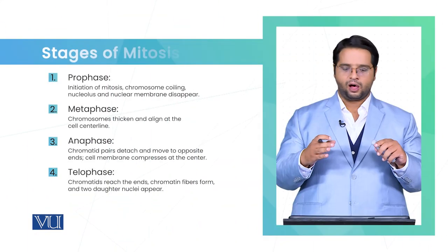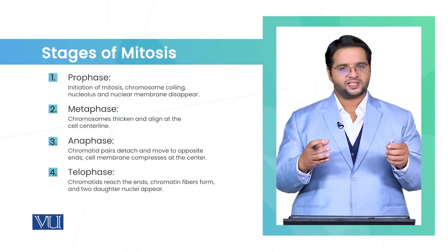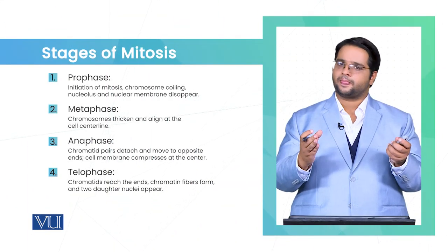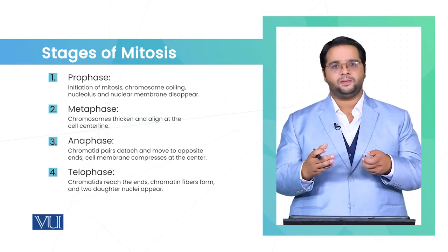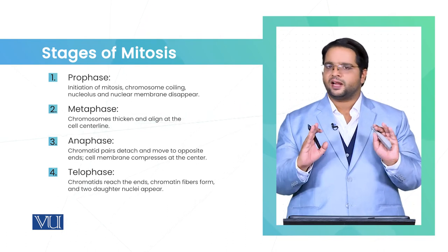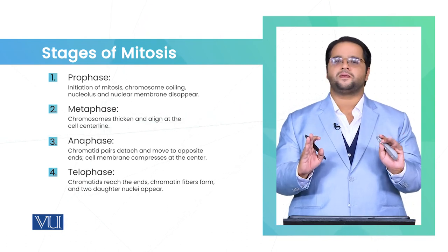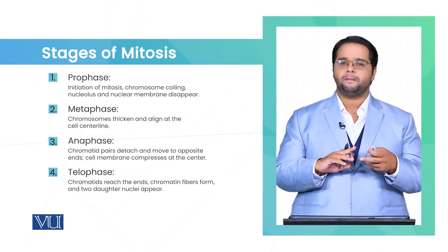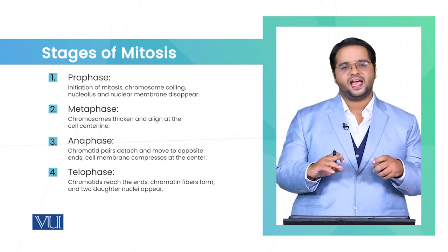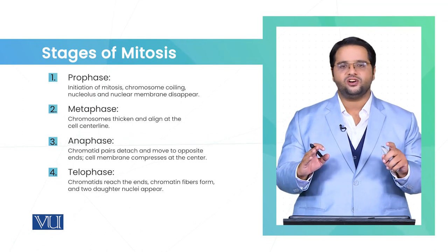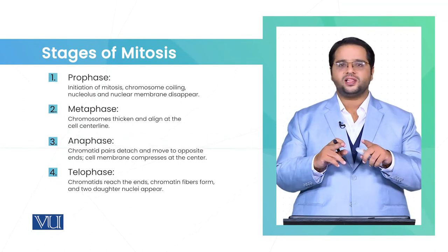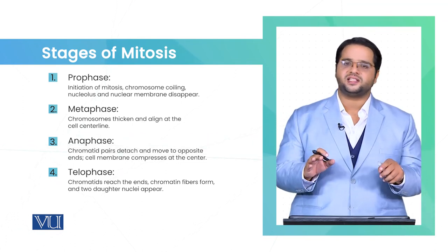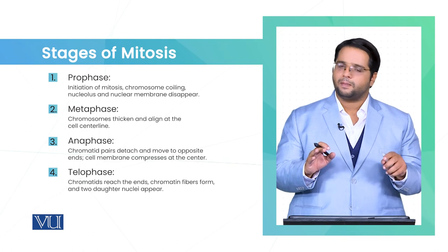Now we are going to discuss the different stages of mitosis. There are only four stages of mitosis: prophase, metaphase, anaphase, and telophase — and all these four phases form the karyokinesis phase of mitosis.